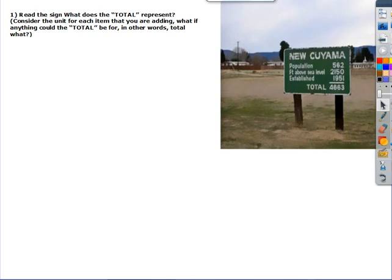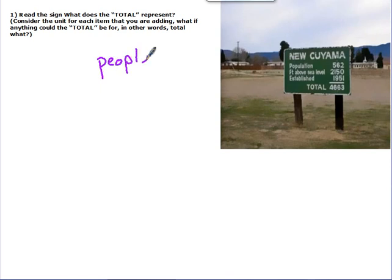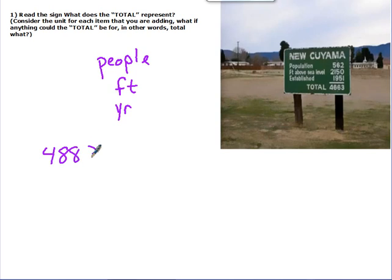So this would be people. The unit for feet above sea level would be feet. And the unit for established in 1951 — I assume that's a year. If we added all those up, that's what they do — they add all of them up to get a total of 4883. But that would be 4883 people, feet, years. It doesn't really make sense, right?